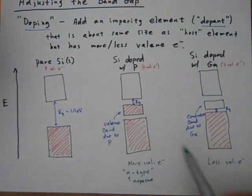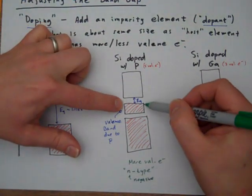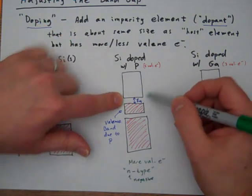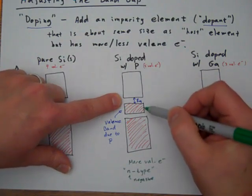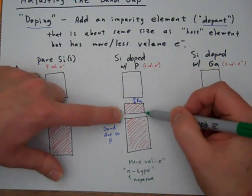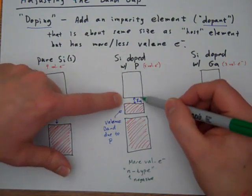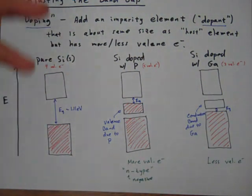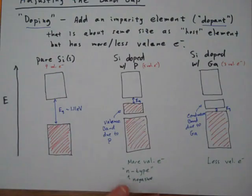So notice what's happened now. Now we've got this filled level, and how much energy would you have to put in to get it to the conduction band? Well, much less now. We've narrowed that band gap. So adding this phosphorus as a dopant has added new molecular orbitals at kind of an in-between energy, which has narrowed this band gap. And so now we've made an improved semiconductor that is a little bit more electrically conductive.